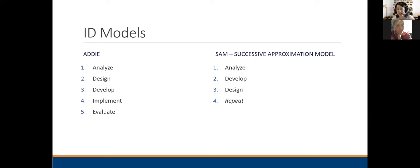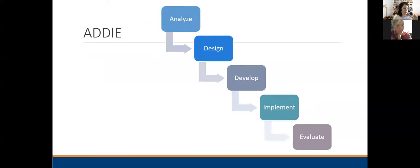SAM stands for Successive Approximation Model. ADDIE is commonly described as a waterfall model — the idea is that you spend a lot of time in the analysis and design phase, and only then, once you do a really thorough analysis and design, do you develop it, implement it, evaluate, and that's it. It's kind of a one-way road. It can be a little inflexible if there are any major changes or hiccups. It can be difficult once you've spent so much time on design only to find out it's not working in the implement or evaluation phase.